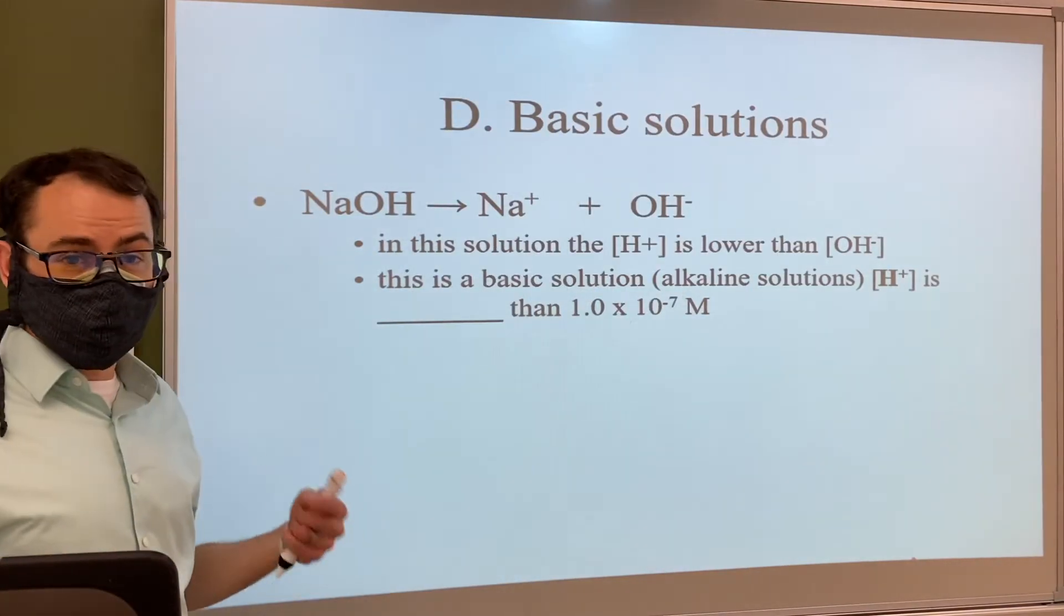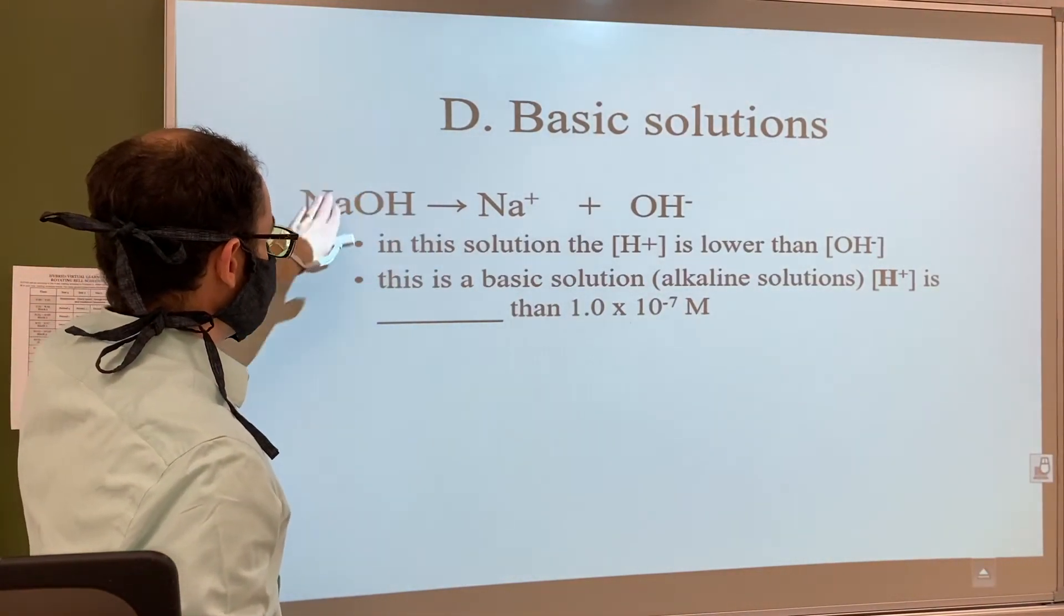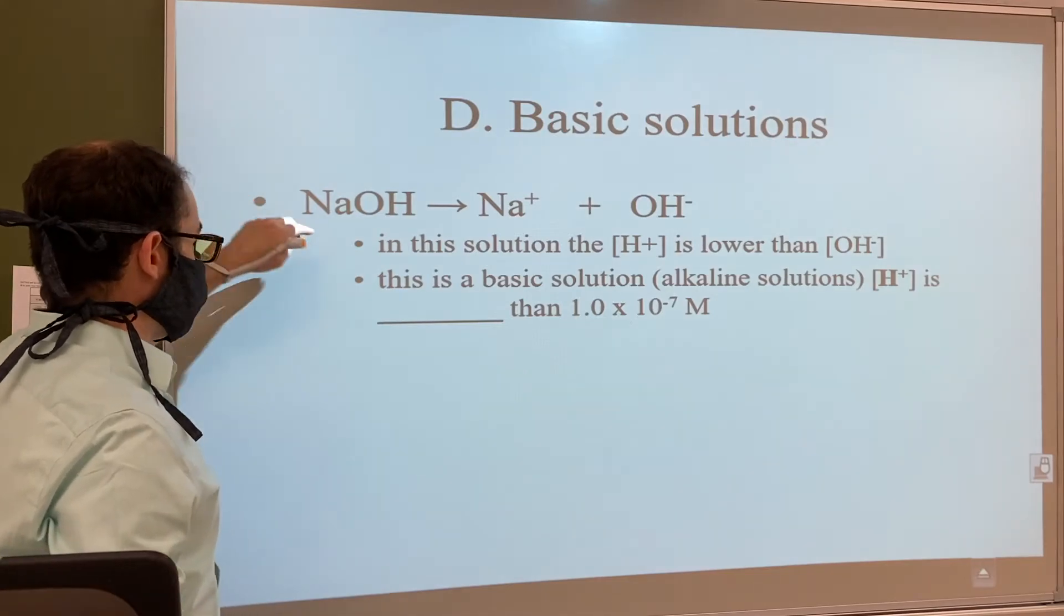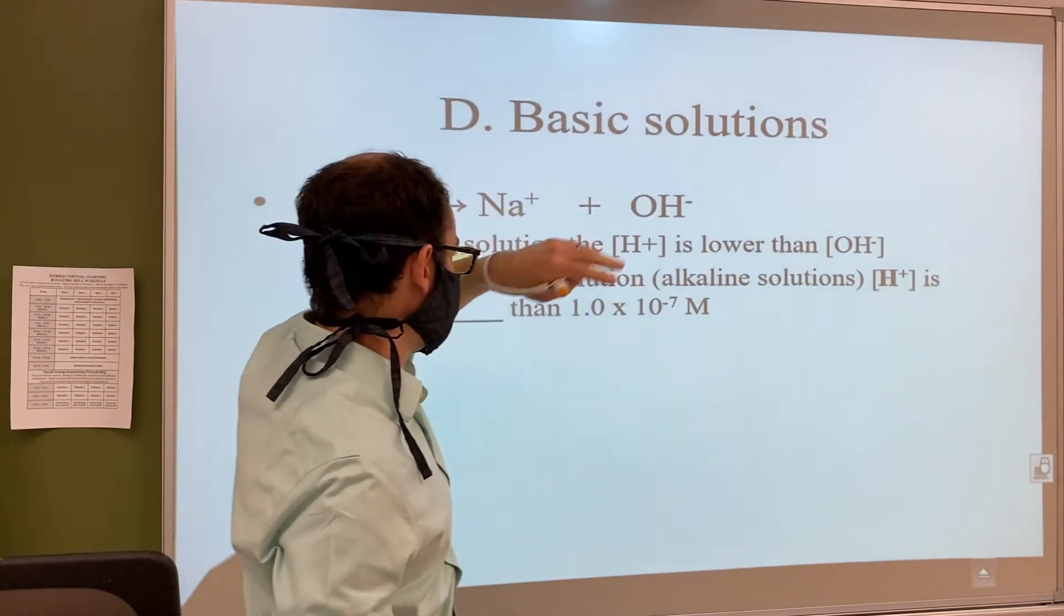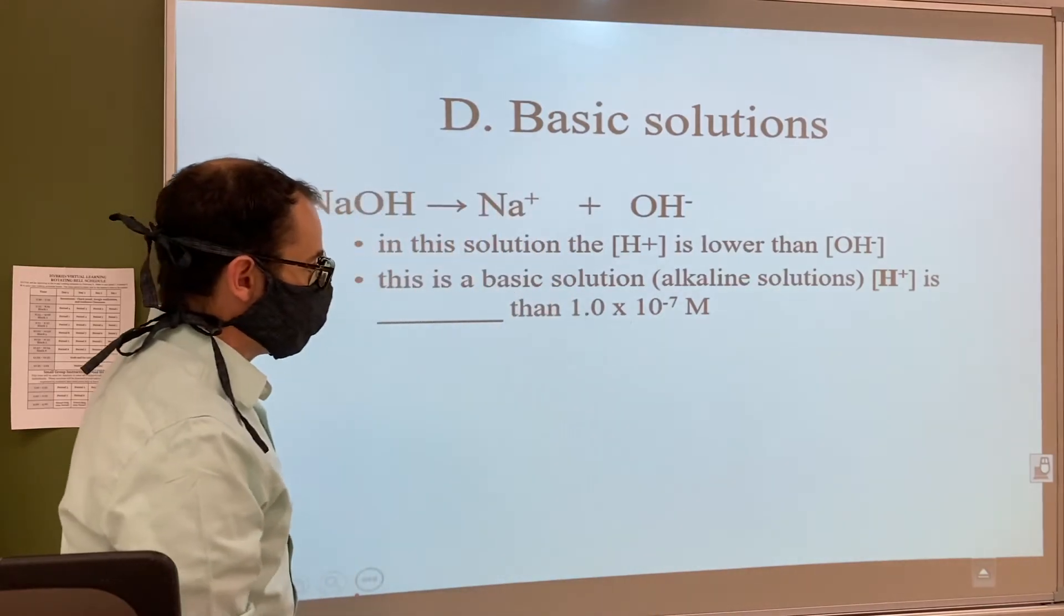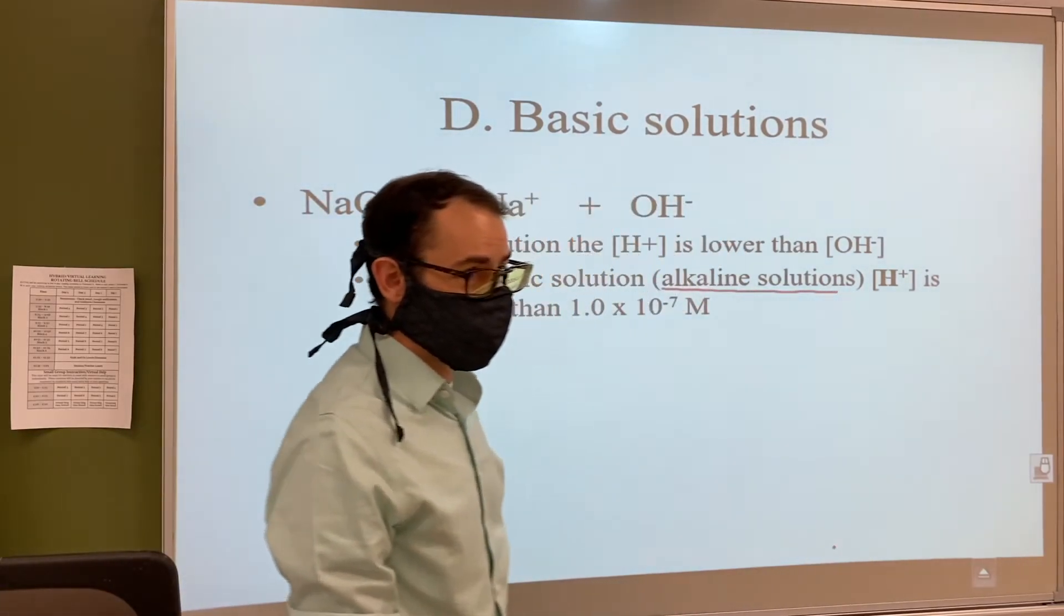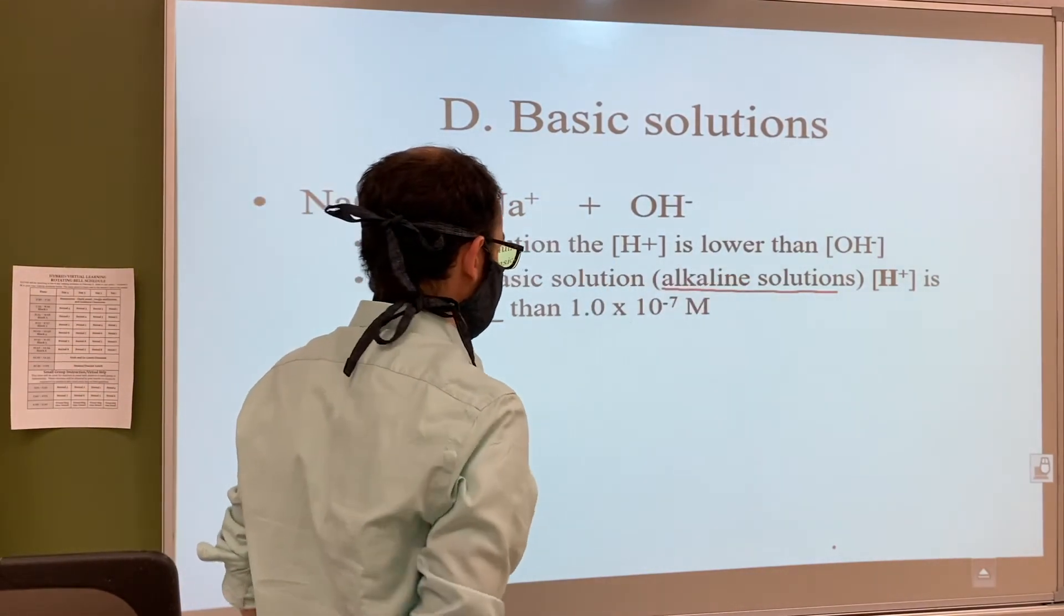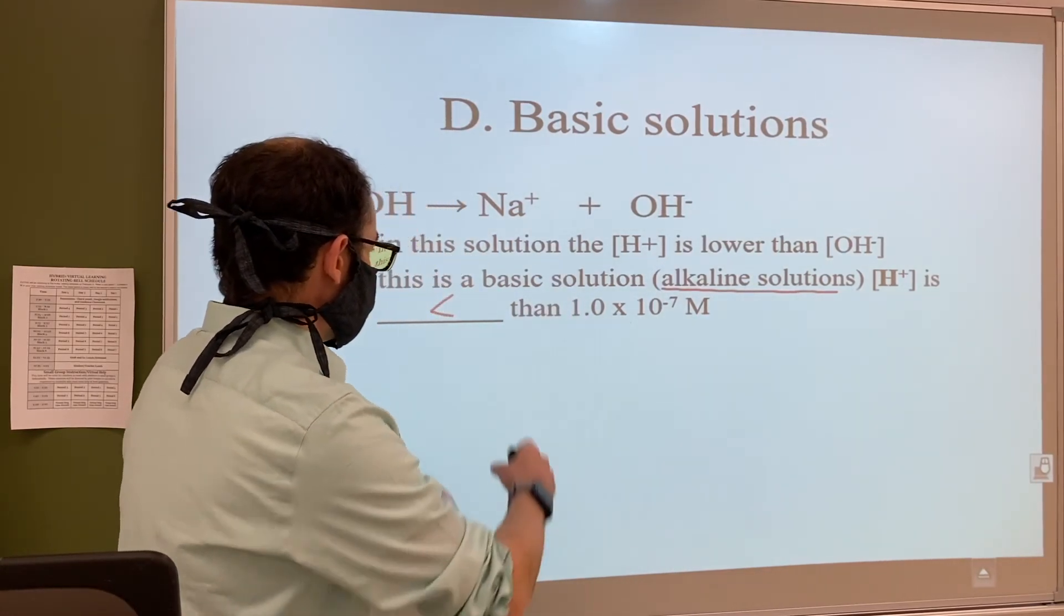Basic solutions do the opposite. Here's a strong base - NaOH. We know it's a strong base because of where it is on the periodic table. Group one and group two, skipping the first two in those groups, going down - if it's with OH it's strong. So single-headed arrow, we get Na+ and OH-. In this solution the [H+] is lower than the [OH-]. This is a basic solution, sometimes they use the term alkaline. So [H+] is going to be less than 1.0 × 10^-7.